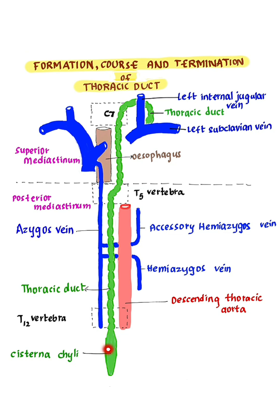The thoracic duct begins as an upward continuation of the cisterna chyli. Cisterna chyli is a dilated lymphatic sac present in front of the L1-L2 vertebrae. The thoracic duct begins near the lower border of T12 vertebra, and then enters the thorax by passing through the aortic opening of the diaphragm.